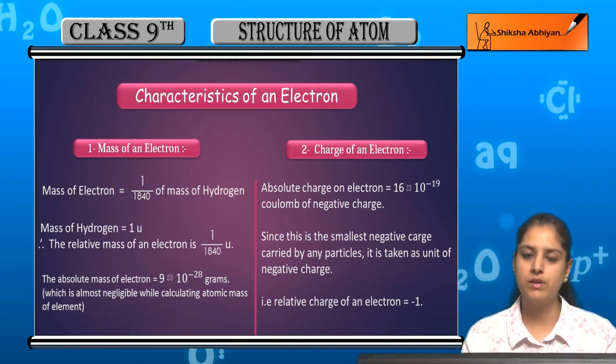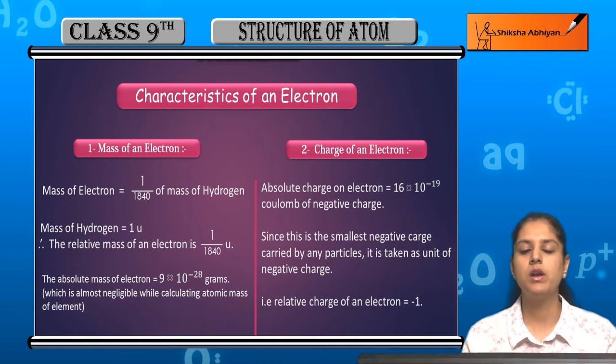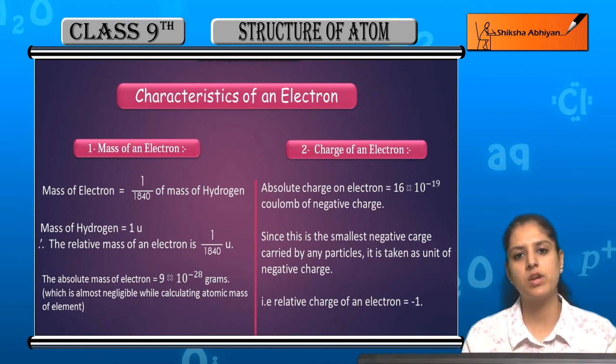So this is all about discovery of electron and some characteristics of electron. We will now see how the other particles were discovered.